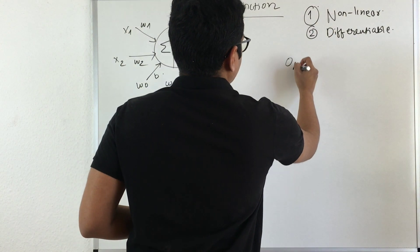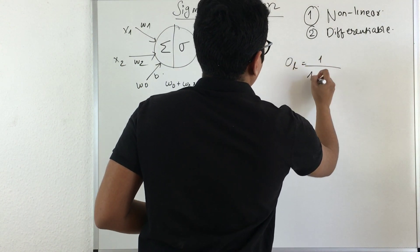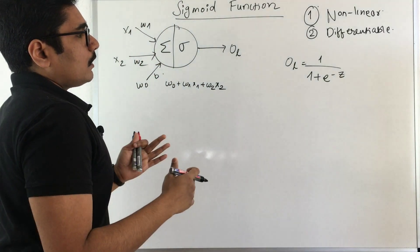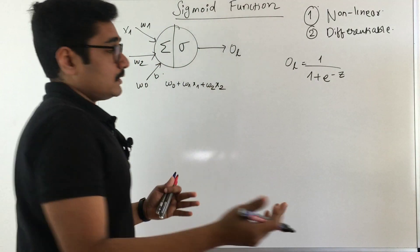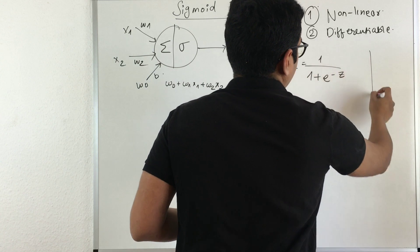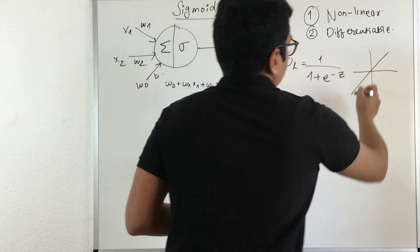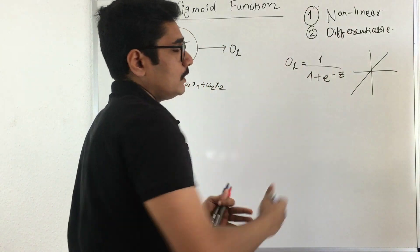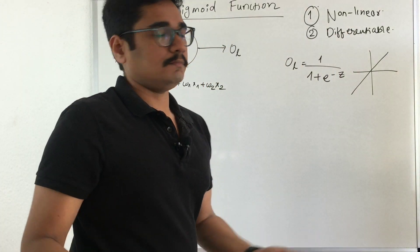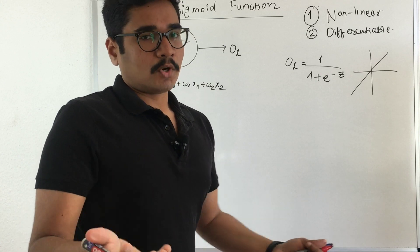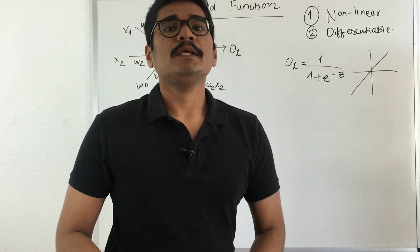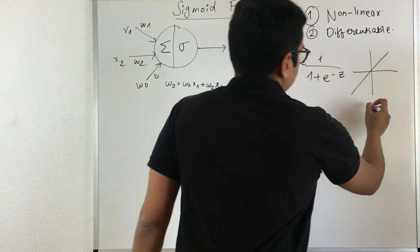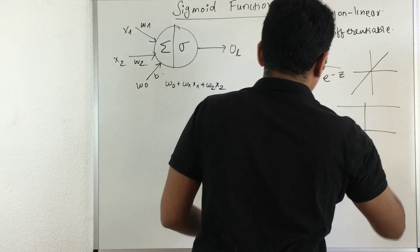The output function is given as 1/(1 + e^(-z)). In linear regression, the problem was that our decision boundary, when we want to classify, just shoots up to -1 to +1. We can't use that for probability. Since probability cannot be negative, we want to squeeze it into some form. That's why we mainly use this sigmoid function.